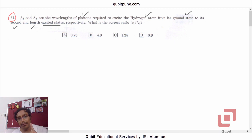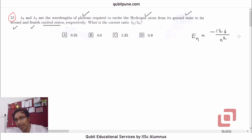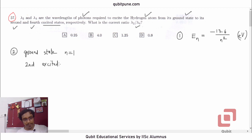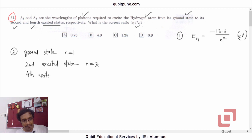To solve this problem, we first need to know the main formula. That formula is En — the total energy of the electron in the nth orbit — is negative 13.6 upon n squared in electron volts. The unit doesn't matter since we are interested in the ratio. The ground state refers to the first orbit, and the second excited state refers to the third orbit, because the second orbit is the first excited state.